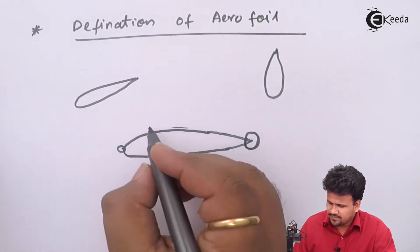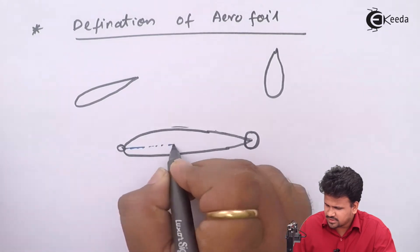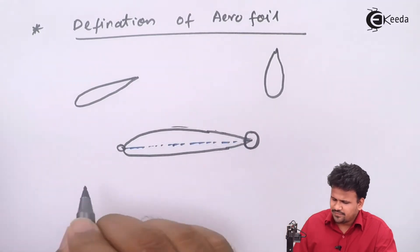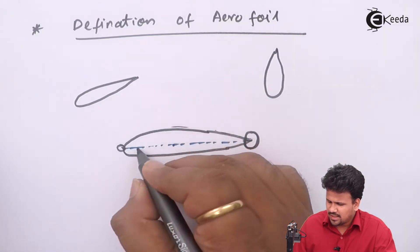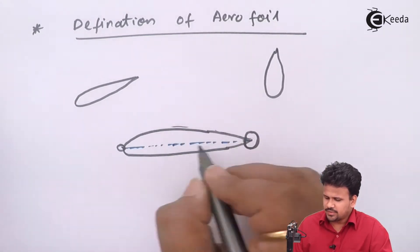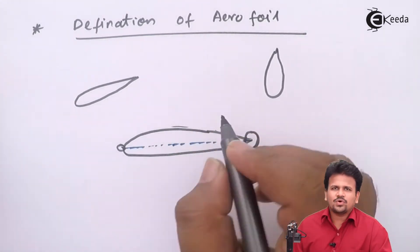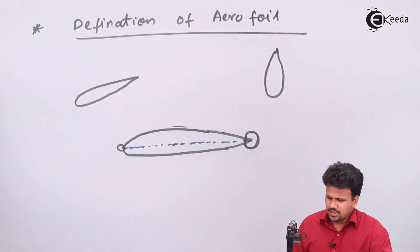Over here we can consider this line which divides the aerofoil into two equal parts. So this line divides into two equal parts. This is the line of symmetry of an aerofoil.